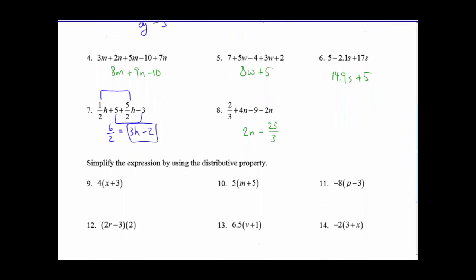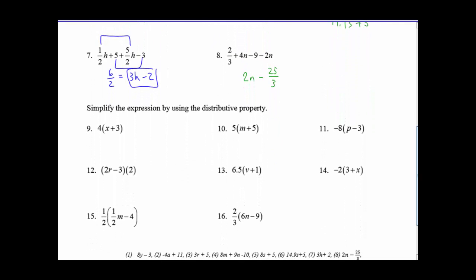Jump down to number 9 now. Now we're going to take the expression and apply the distributed property with parentheses. Notice, we're going to take this 4 because it's 4 times the quantity X plus 3, and we're going to distribute that to the X, and we're going to distribute the 4 to the 3. So 4 times X is 4X. 4 times 3 is 12.